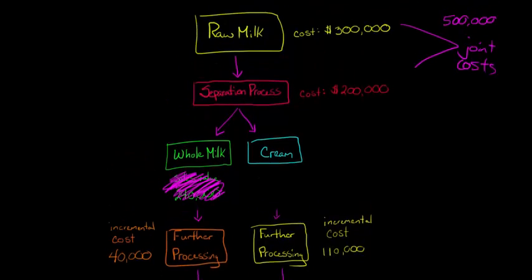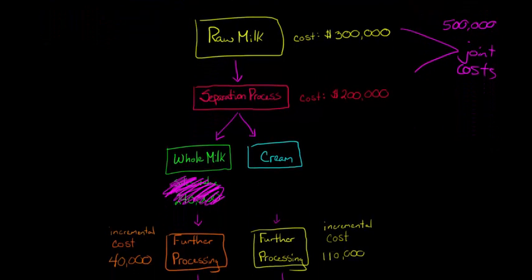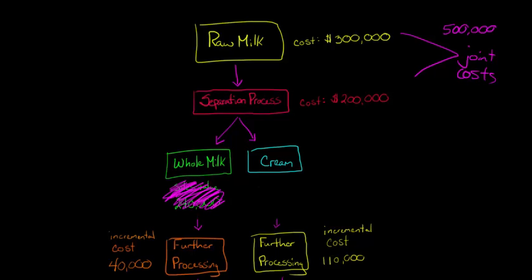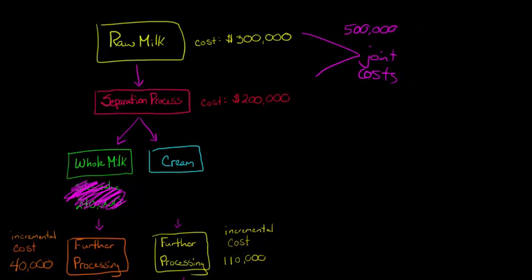We are going to use this constant gross margin NRV method to do that. Here's how we start: first, what we need to do is calculate the overall gross margin for the entire firm.